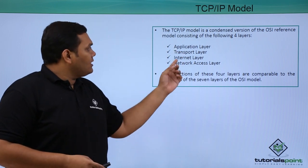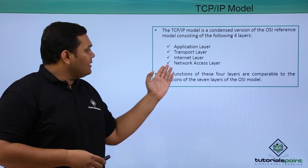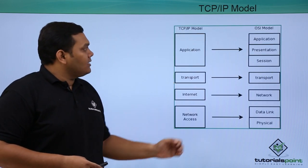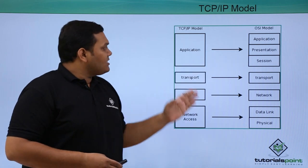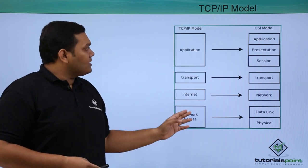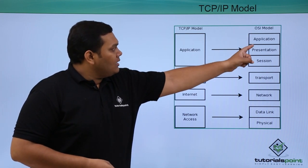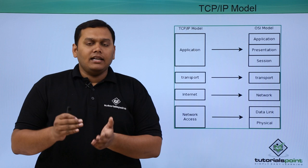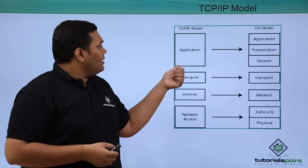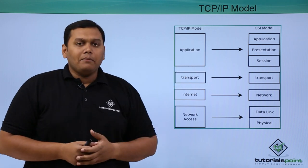The four layers are: application layer, transport layer, internet layer, and network access layer. In the OSI model there are 7 layers, while TCP/IP has 4 layers. In TCP/IP, the OSI model's application, presentation, and session layers are combined and called the application layer.